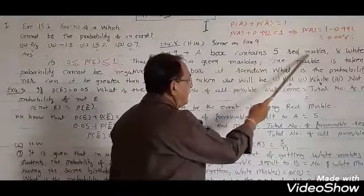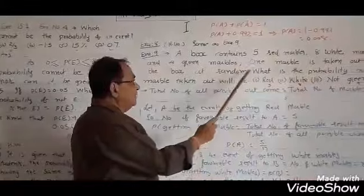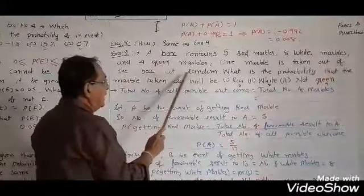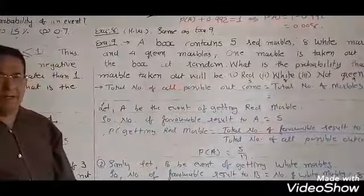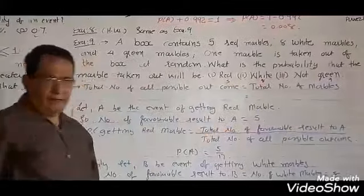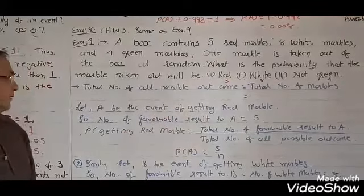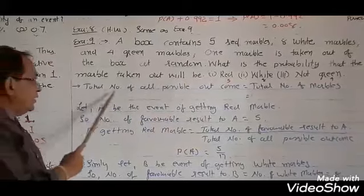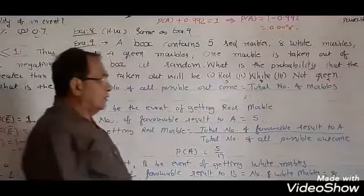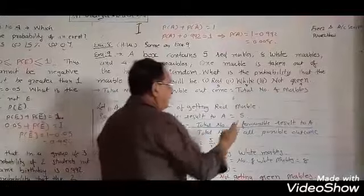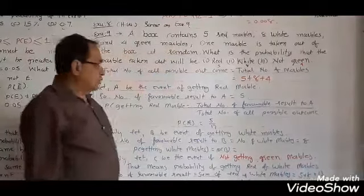A box contains 5 red marbles, 8 white marbles and 4 green marbles. One marble is taken out of the box at random. What is the probability that the marble taken out will be red, white, or not green? First, total number of all possible outcomes equals total number of marbles: 5 red plus 8 white plus 4 green, so total is 17.